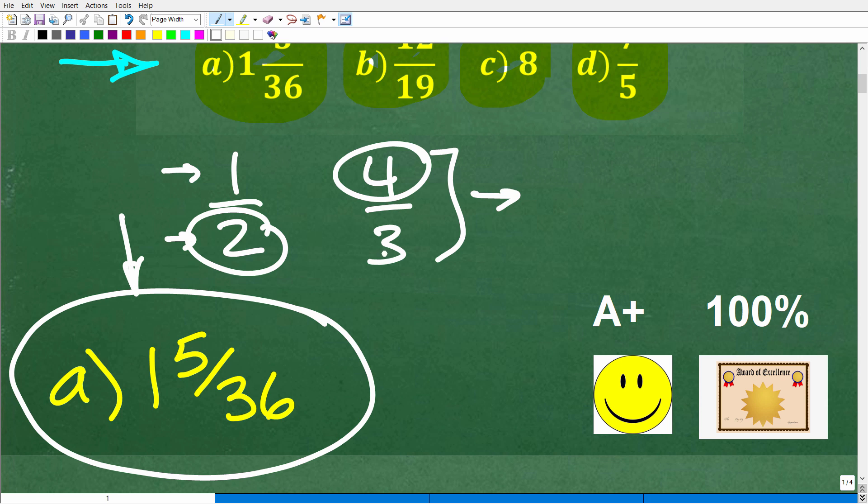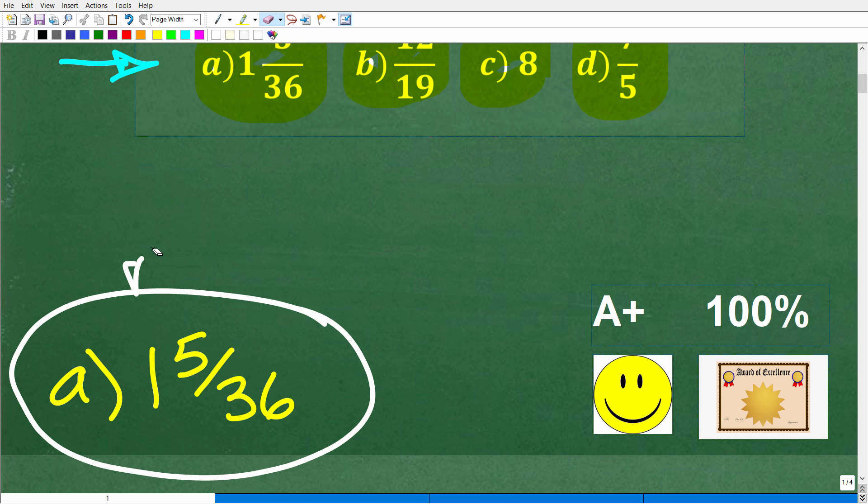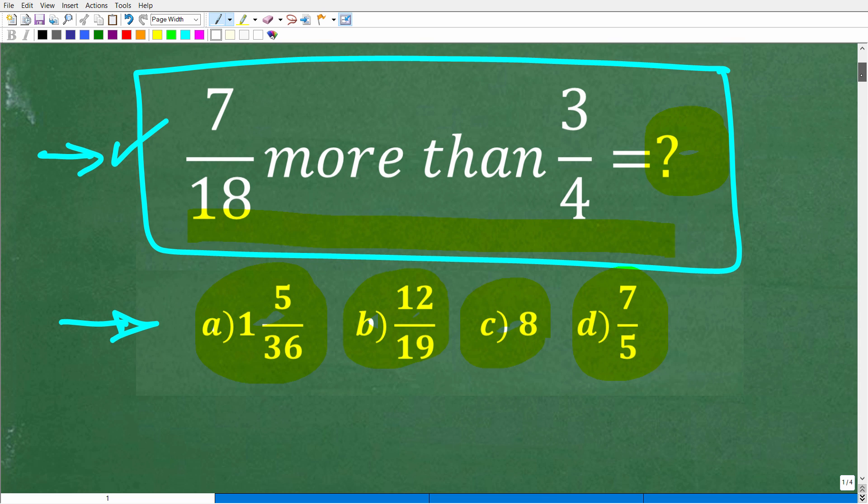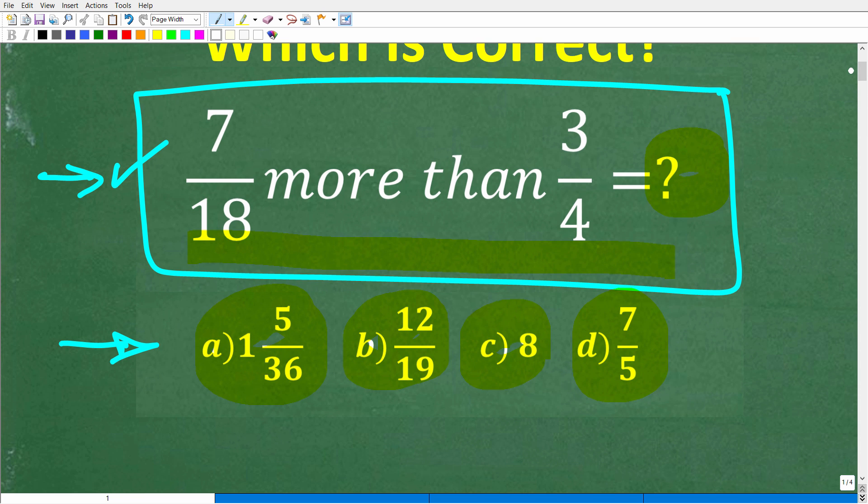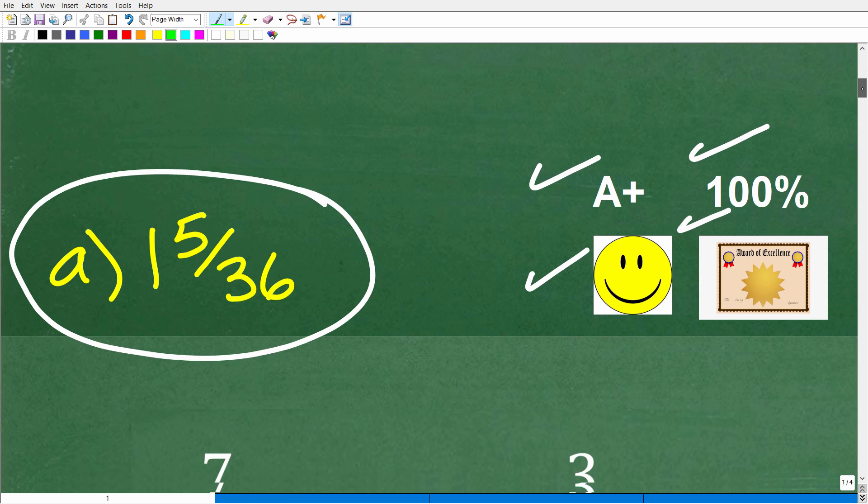So when the bottom number is bigger than the top number, like in this example right here, this is a proper fraction. But if you have like 4 over 3 where the numerator is bigger, that's an improper fraction. And these type of fractions can be converted to mixed number fractions like this. So we have mixed number fractions, improper fractions, and proper fractions.